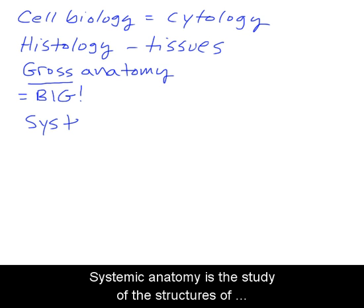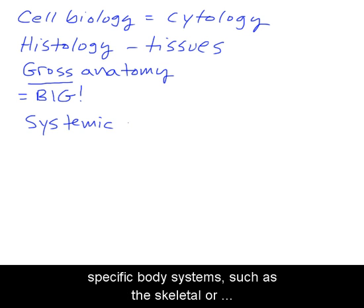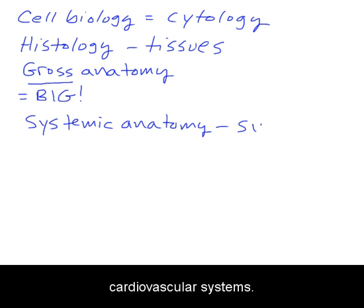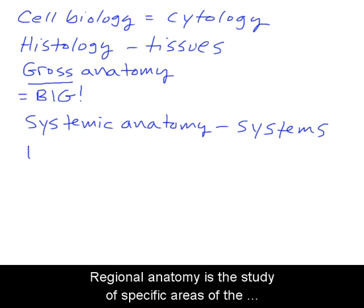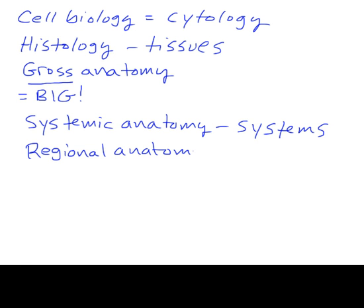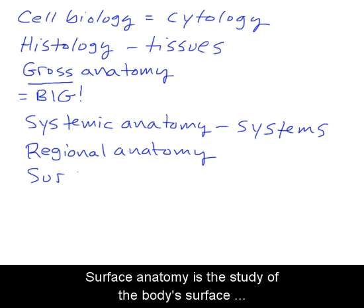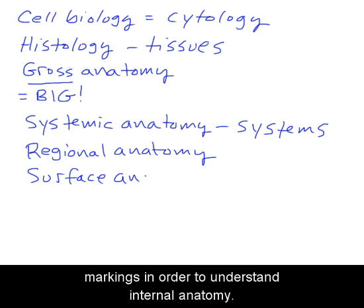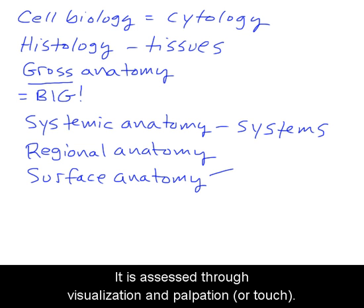Systemic anatomy is the study of the structures of specific body systems, such as the skeletal or cardiovascular systems. Regional anatomy is the study of specific areas of the body, such as the head or chest. Surface anatomy is the study of the body's surface markings in order to understand internal anatomy. It is assessed through visualization and palpation, or touch.